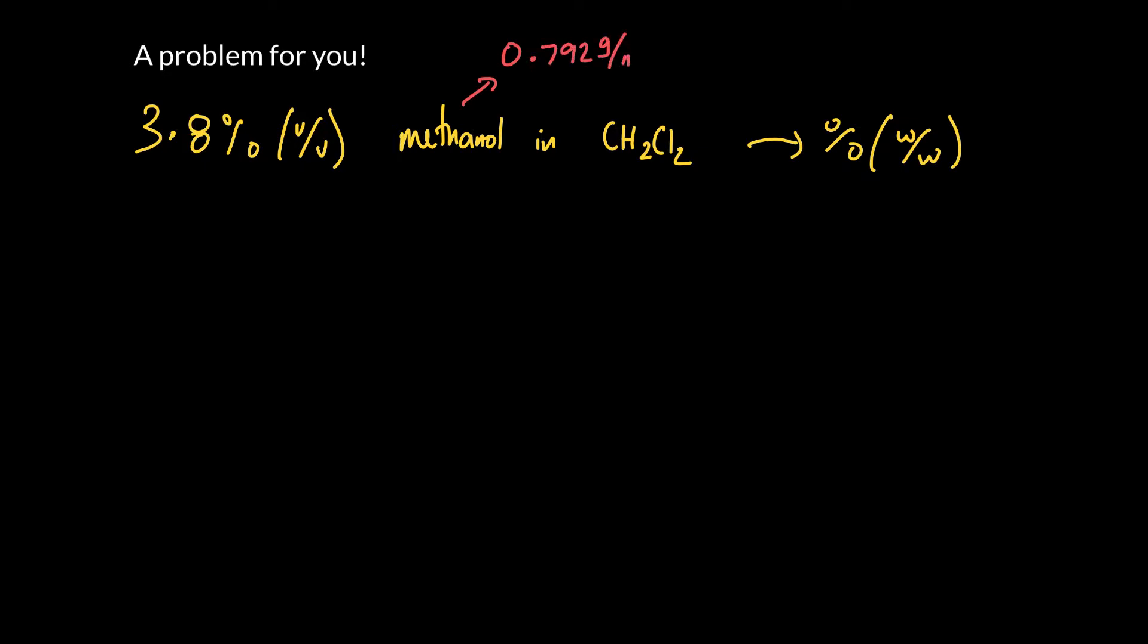So on an exam, I'll give you these problems, and on the homework they're probably given too. But you need the densities. So the densities of these are 0.792 and 1.33 grams per milliliter.